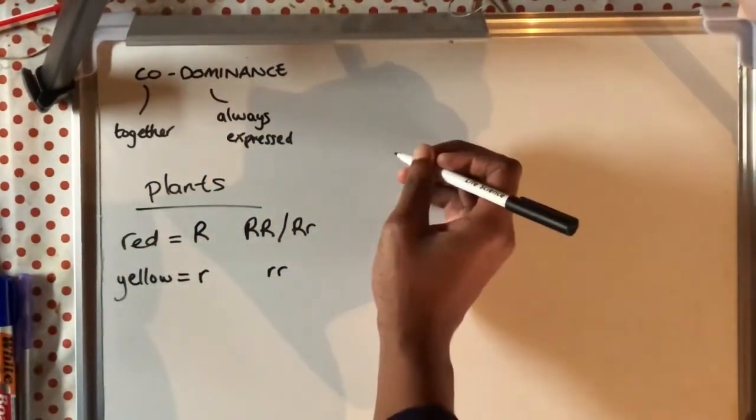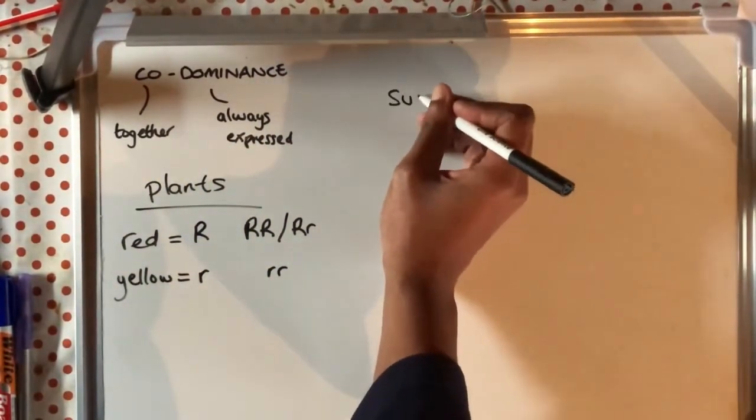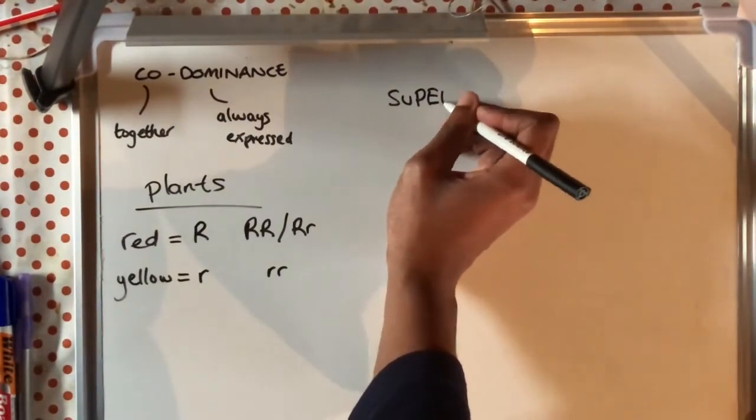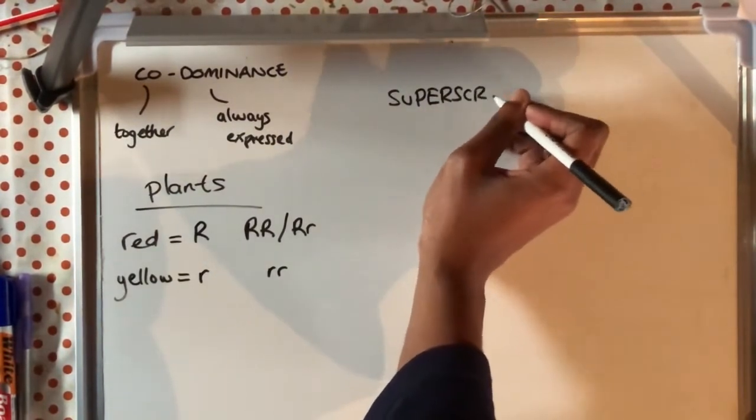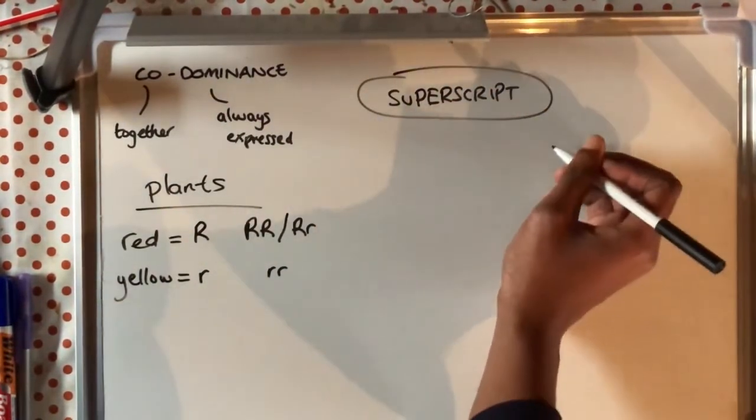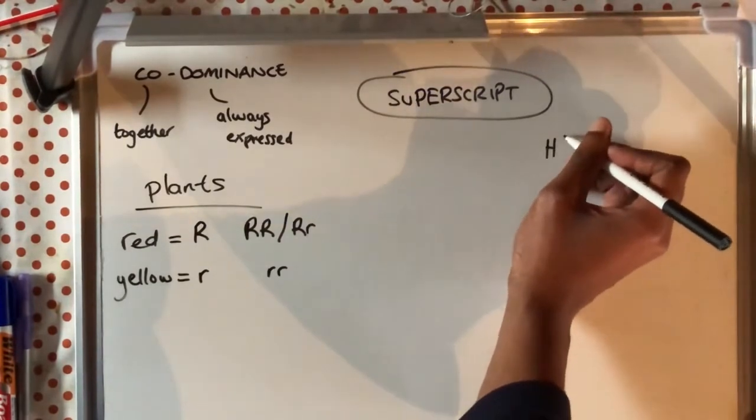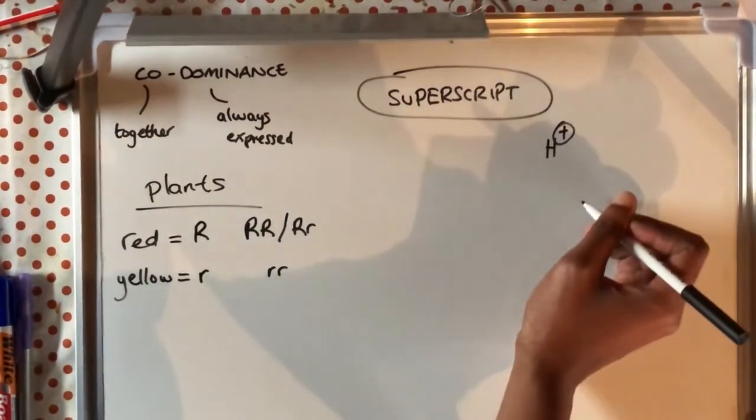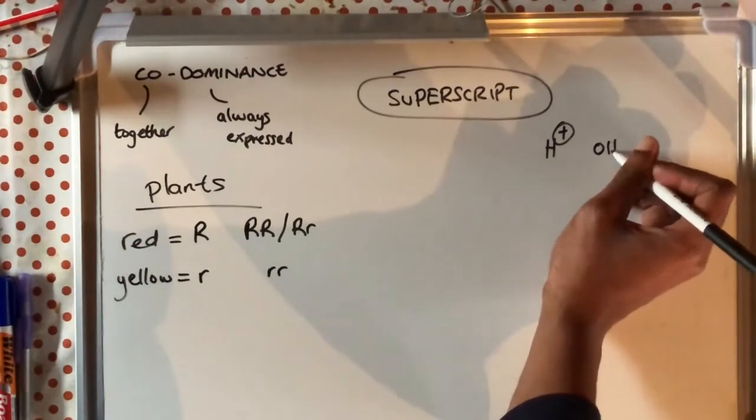So how are we going to use our notations to draw a Punnett square, construct a genetic cross with two dominant alleles? So now we need to bring in something called the superscript. Now you've written a superscript, have drawn superscripts before. If you think back to your biological molecules topic, you saw hydrogen ions and hydroxide ions in terms of water.